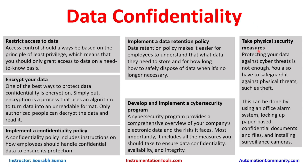The sixth method is to take physical security measures. Physical security is the first line of defense for any industrial control system. Protecting data against cyber threats is not enough — you must also safeguard against physical threats such as theft. NAS drives, hard drives, and USB drives should not be left in locations where they can be stolen. This can be addressed using office alarm systems, locking paper-based confidential documents, installing surveillance cameras, and implementing card-based entry and exit monitoring to ensure all data is kept under complete supervision.